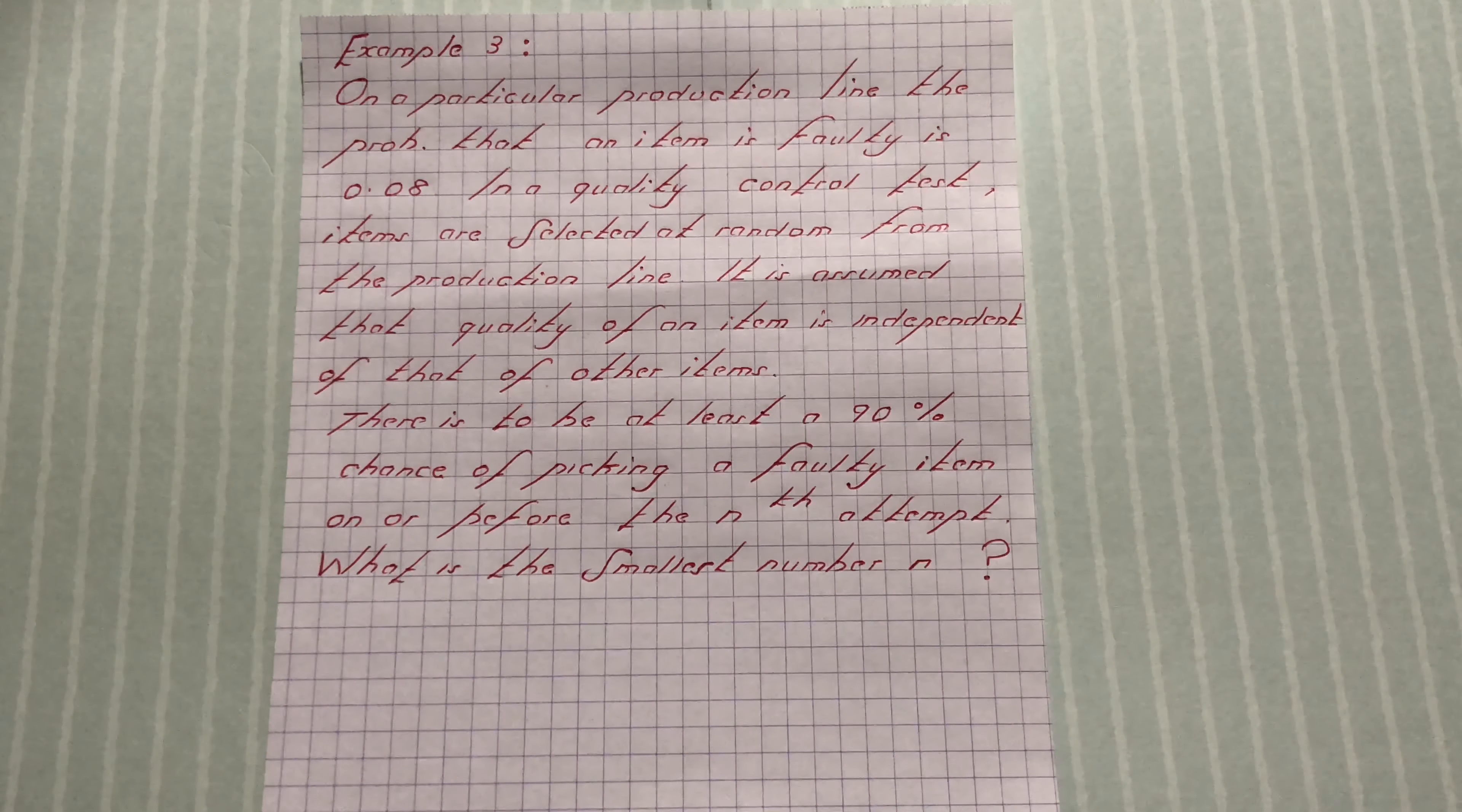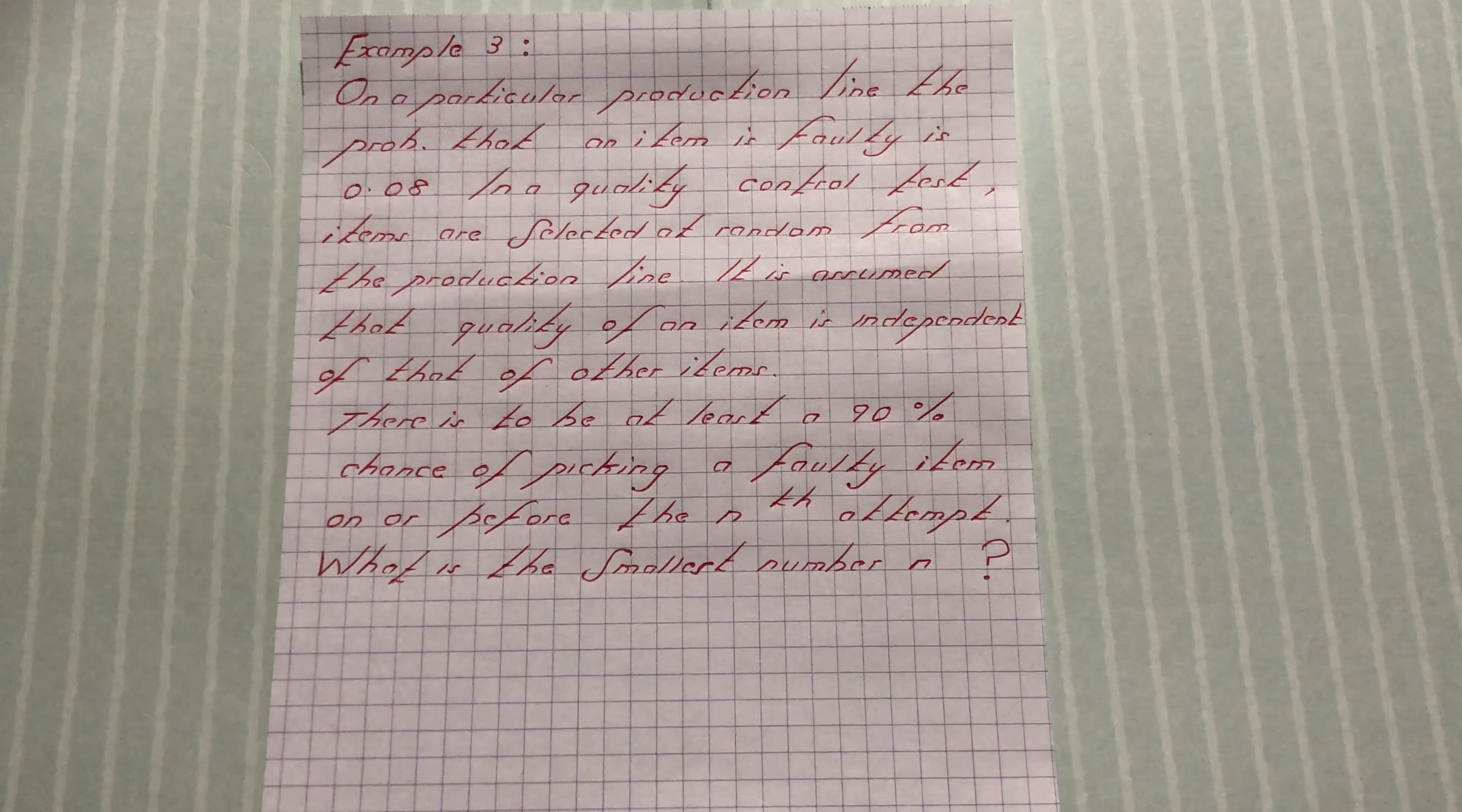Next question on geometric distribution. On a particular production line, the probability that an item is faulty is 0.08.